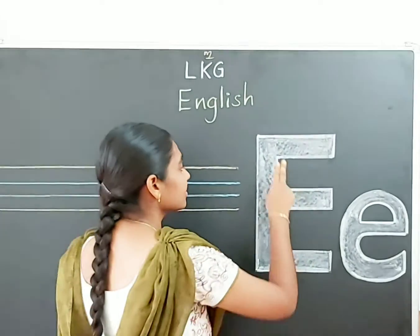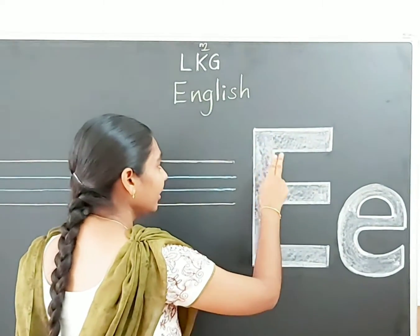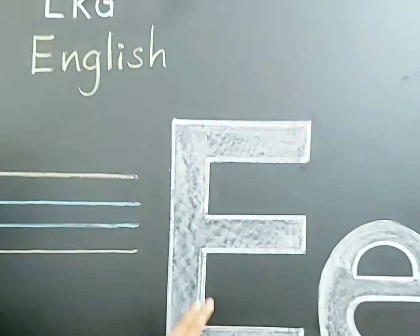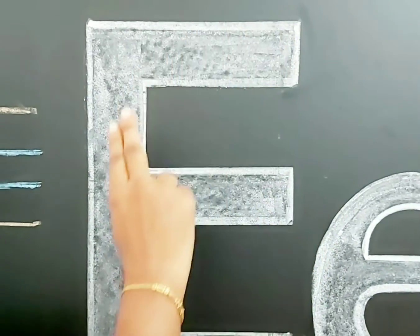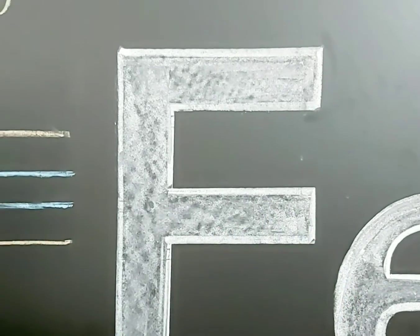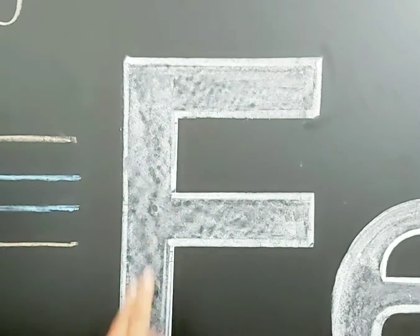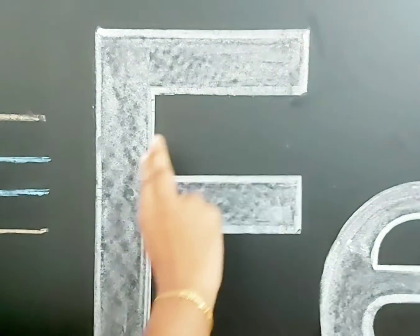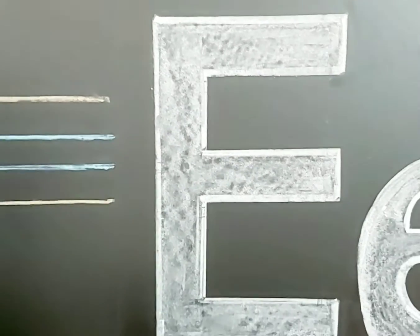Capital E: standing line, sleeping line, again sleeping line, and one more sleeping line. This is capital E.